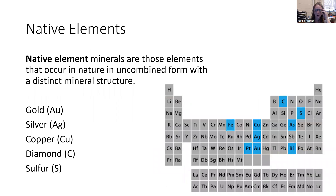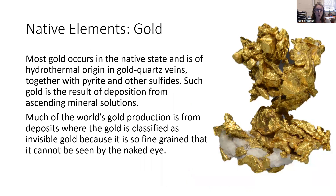Here on the periodic table, I'm showing you all of the different elements that can bond with just themselves. Gold — most gold occurs in its native state, meaning it's just gold, not bonded to anything else. It's typically of hydrothermal origin in gold-quartz veins, and you'll often find it with other economic minerals like pyrite and other sulfides. So if you're looking for gold, you want to find somewhere that has hydrothermal deposits — maybe volcanic deposits next to a fault.